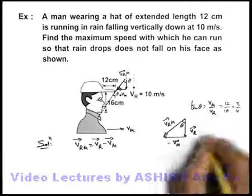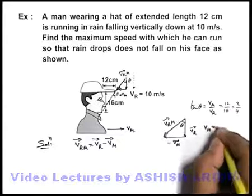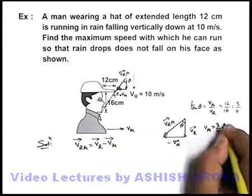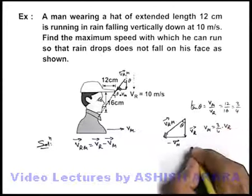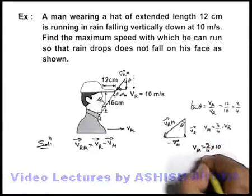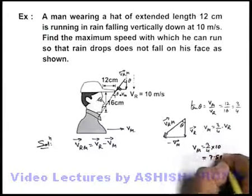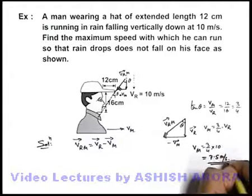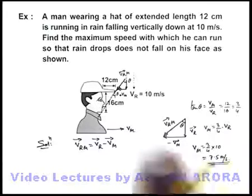So we can easily get the value of velocity of man, that is equal to 3 by 4 times the velocity of rain, or velocity of man is 3 by 4 into 10, which can be written as 7.5 meters per second. This is the maximum speed at which the man can run.